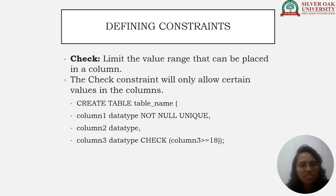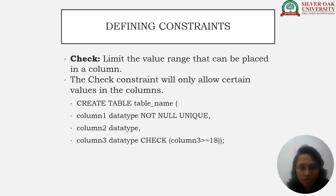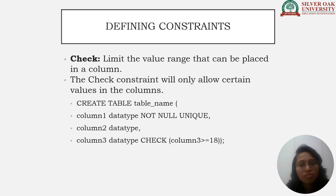The Check Constraint limits the value range that can be placed in a column, allowing only certain values. Syntax: CREATE TABLE table_name (column1 datatype NOT NULL UNIQUE, column2 datatype, column3 datatype CHECK (column3 >= 18)). It is very important to define all these constraints while creating the table itself.